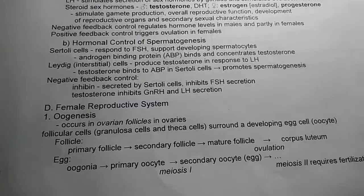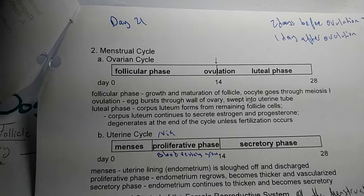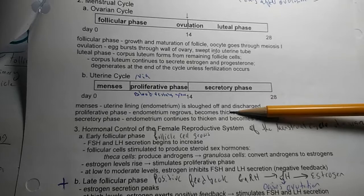It would also include the menstrual cycle, part A, B, uterine cycle. And this will be included in this diagram.